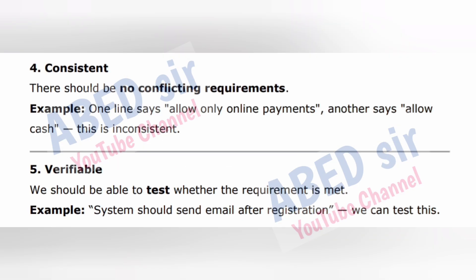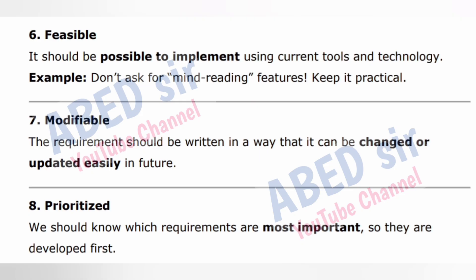4. Consistent — there should be no conflicting requirements. Example: one line says 'allow only online payments,' another says 'allow cash' — this is inconsistent. 5. Verifiable — we should be able to test whether the requirement is met. Example: 'System should send email after registration' — we can test this. 6. Feasible — it should be possible to implement using current tools and technology. Example: don't ask for mind-reading features; keep it practical.